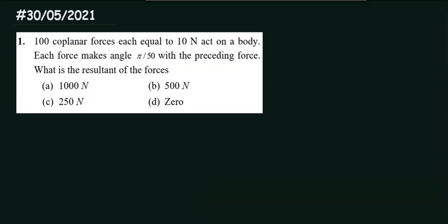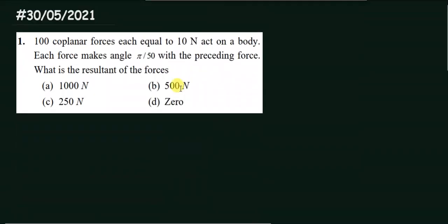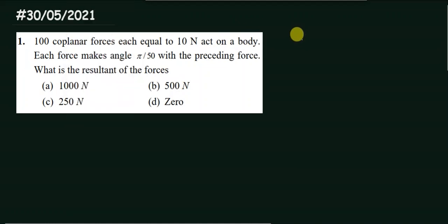Hello dear students, this is a doubt session for the test conducted on 30th May. I have taken four doubts — questions 1, 11, 13, and 14. Make sure you are okay with the solution; if not, ask me. The first question asks: there are 100 coplanar forces each equal to 10 Newton, each force makes an angle π/50 with the preceding force. What is the resultant? This is a simple but tricky question unless you know the concept.